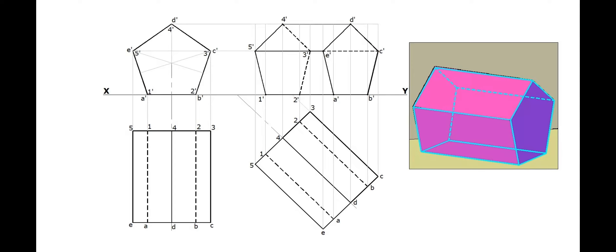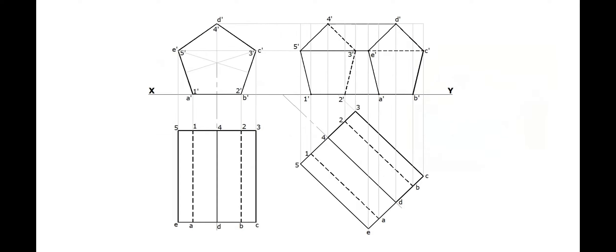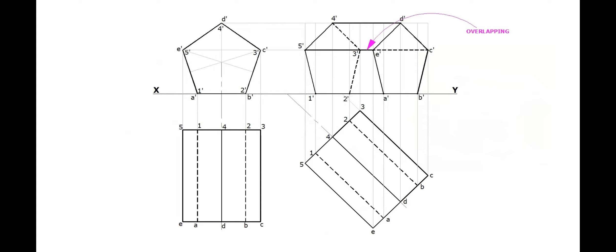You may notice that in a small region, this invisible edge 3' C' is overlapping with the visible edge 5' E'. In that overlapping portion, preference should be given always for the visible edges. So only the remaining portion needs to be drawn dotted.